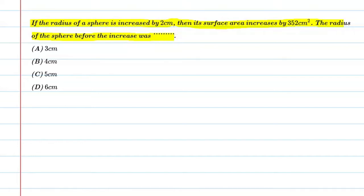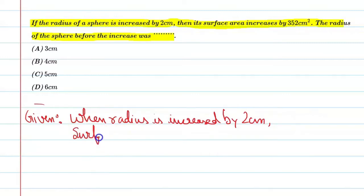First, let us write given. When the radius is increased by 2 centimeters, then surface area increased by 352 square centimeters. Alright, solution start.